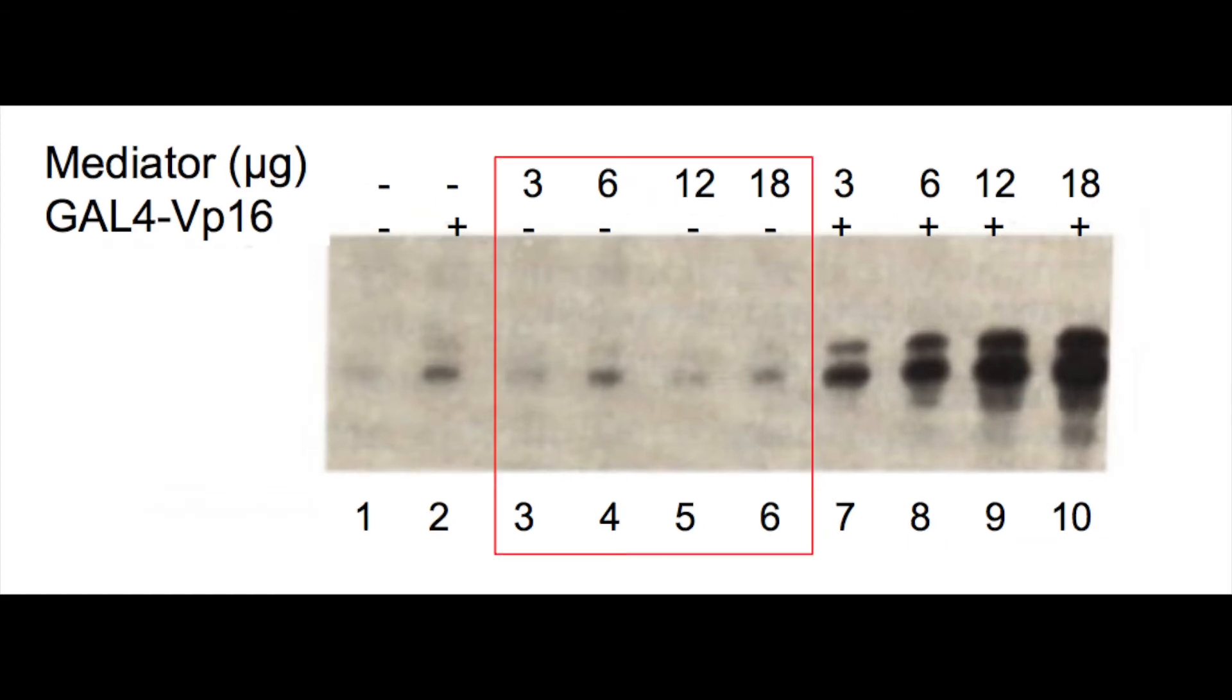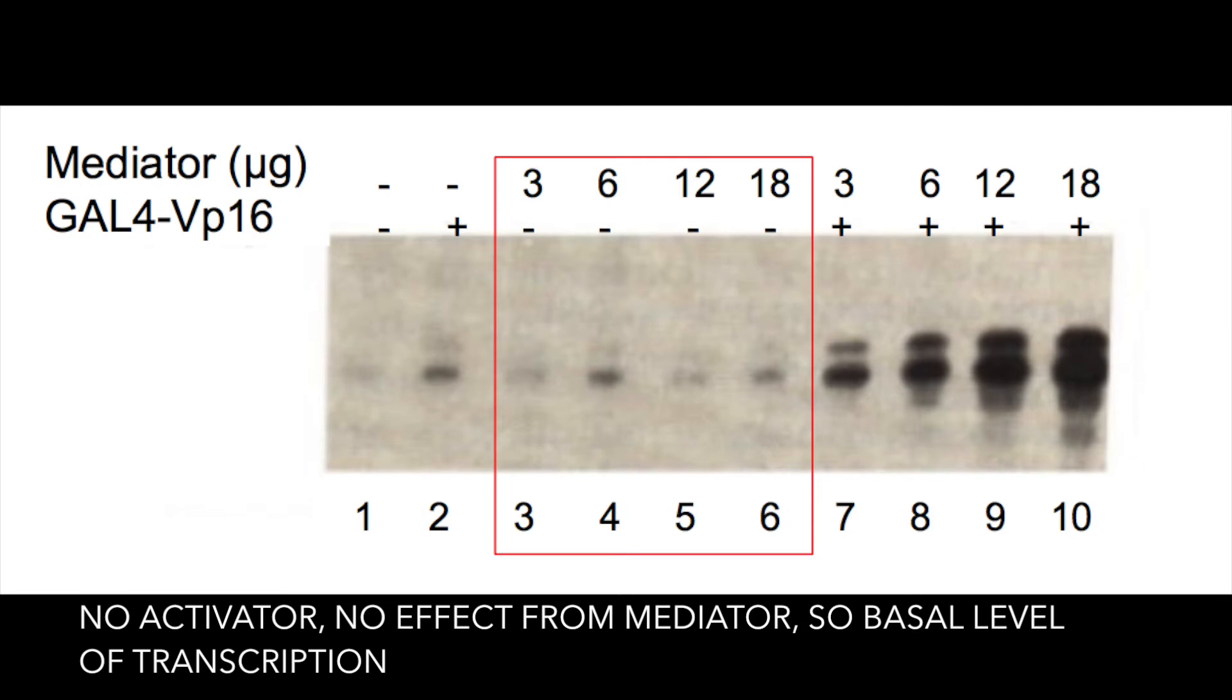To test to see if mediator could increase transcription without an activator present, they performed the same reaction as in lanes 7 through 10, but without the activator. In lanes 3 through 6, we can see only faint bands, which indicate that there is very little transcription occurring. This led scientists to believe that mediator only increases transcription when there is an activator present. With this in mind, the gel bands in lanes 3 through 6 should appear identical since mediator does not affect transcription amounts when no activator is present.